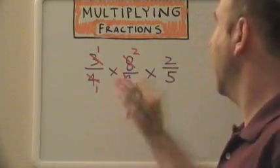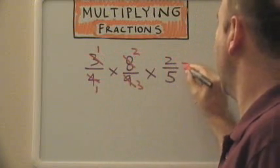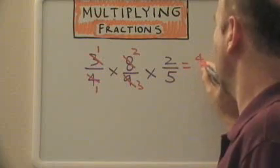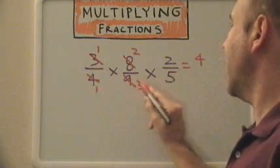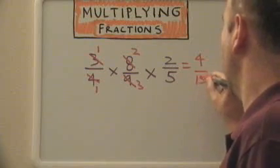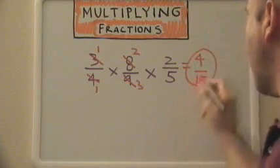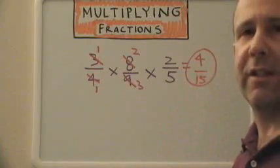Now, all we do is multiply across. One times two is two. Two times two is four. One times three is three. Three times five is fifteen. Since this cannot be reduced anymore, our final answer is four-fifteenths.